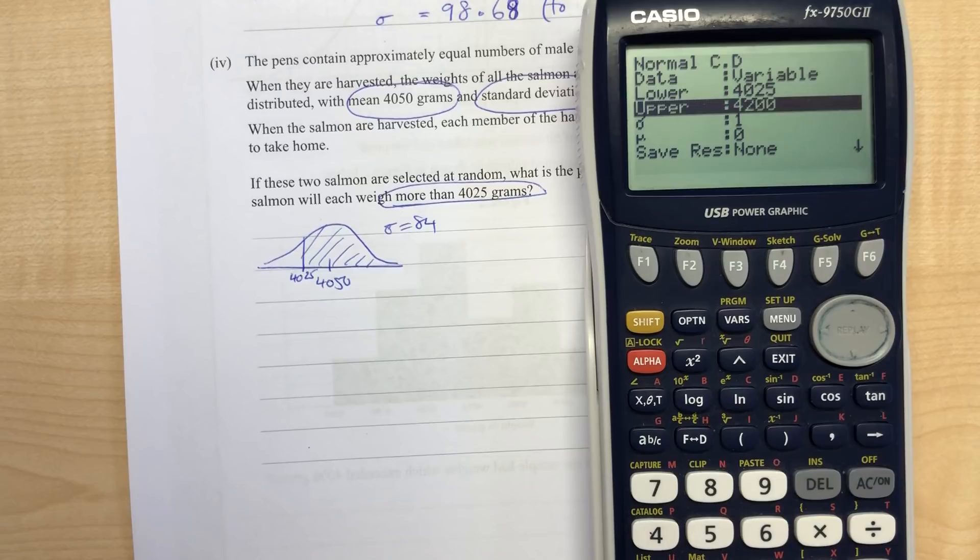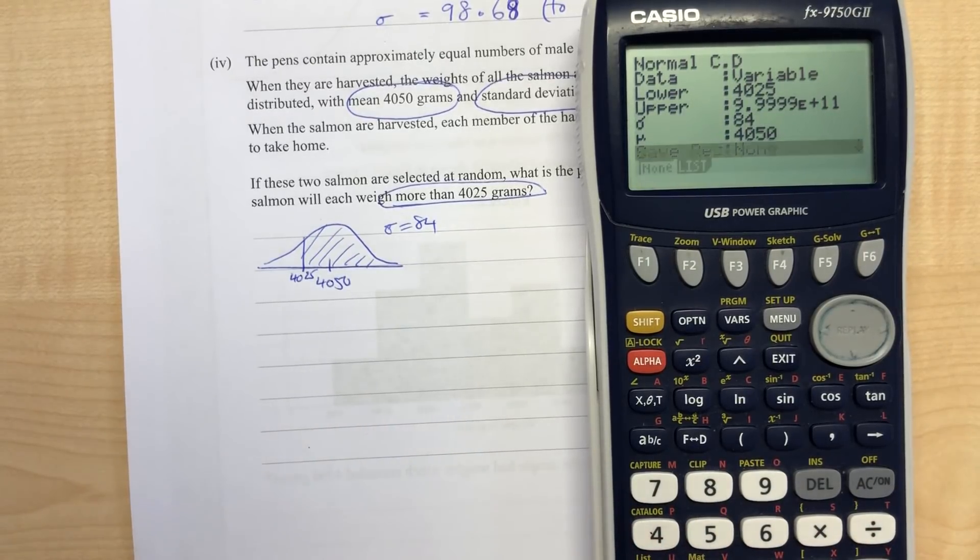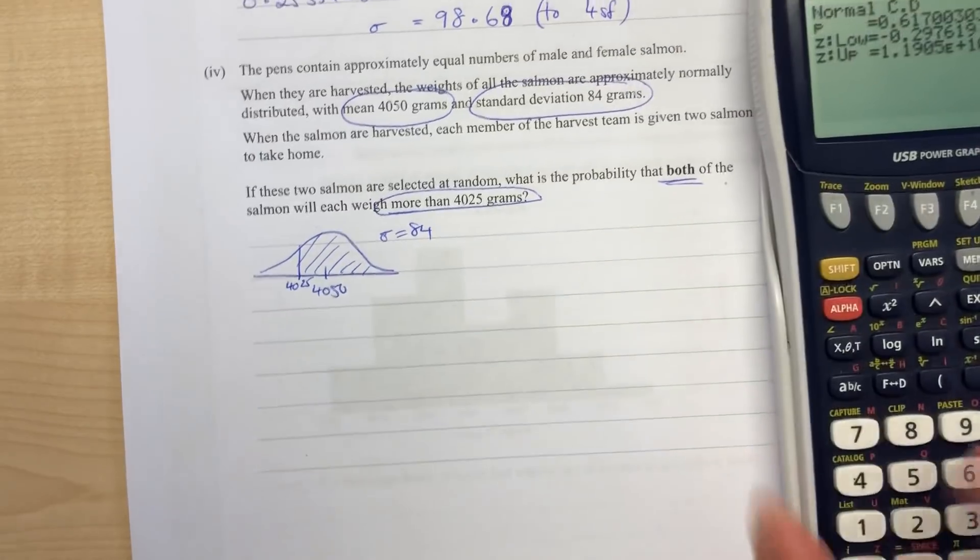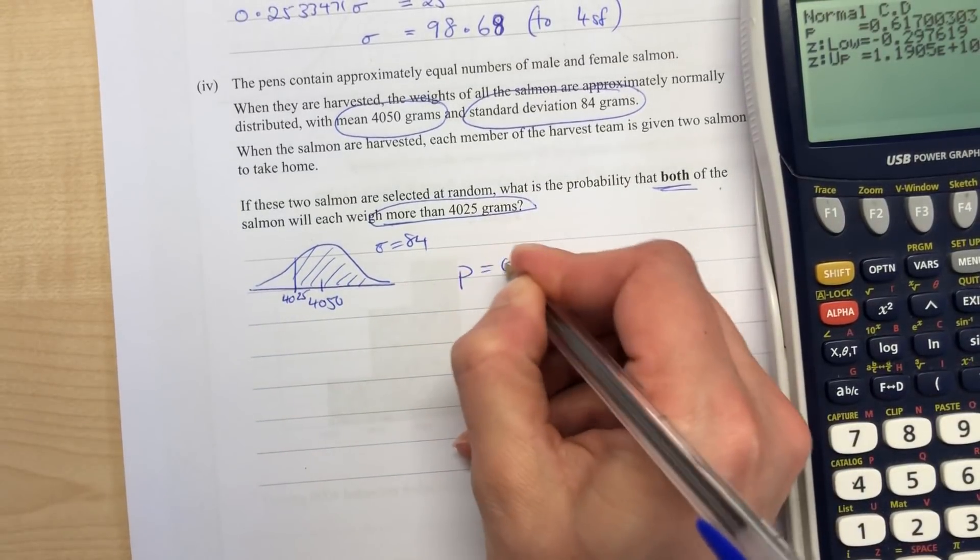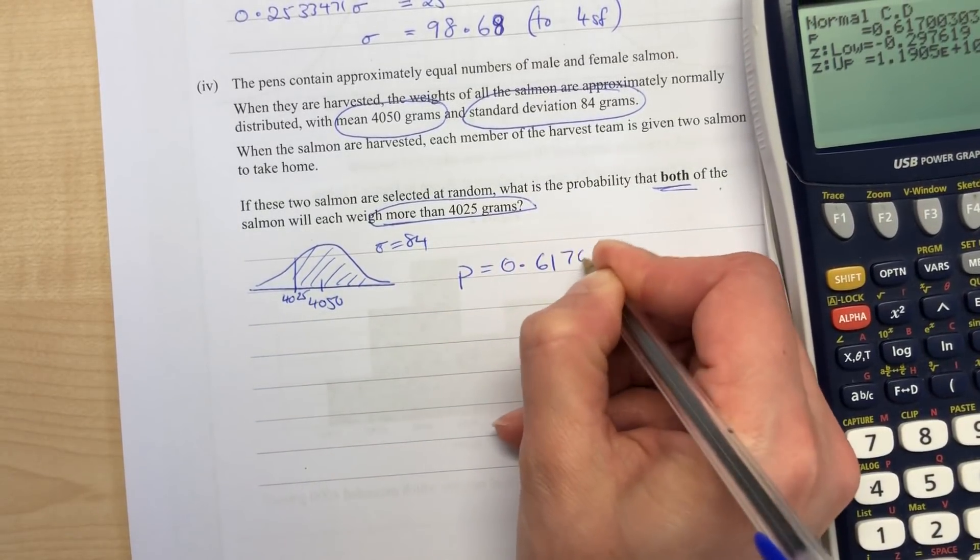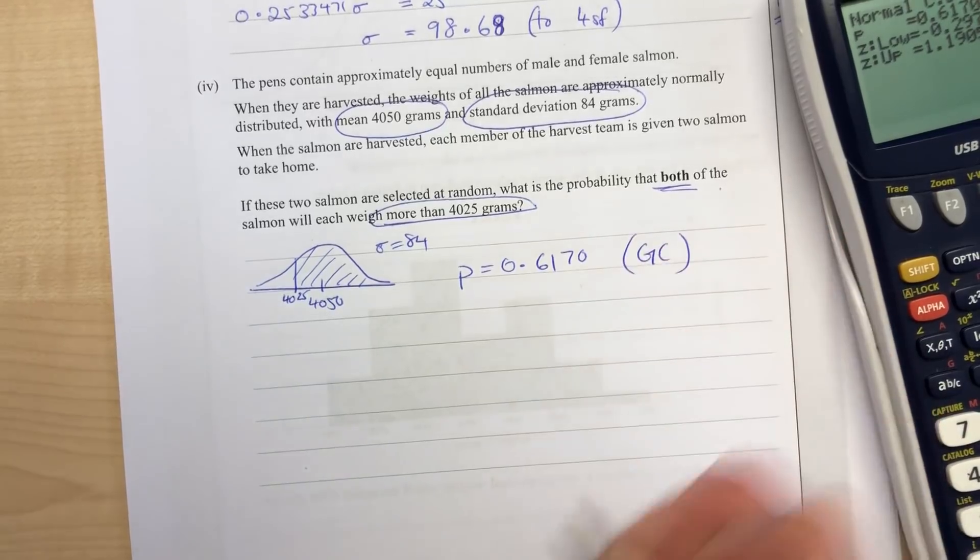The upper limit is something very big. Sigma is 84, mean is 4050. So our probability is 0.6170, done on the graphics calculator.